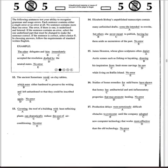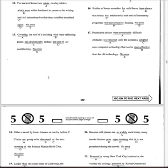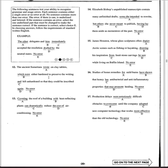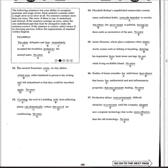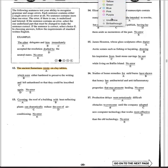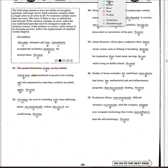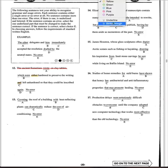These are the questions which can play an important role in making your score up or making your score down. Let's start with number 12: 'The ancient samurai wrote on clay tablets.' We can delete this part out because we do not need it. 'Which were either' — either is an important word because it's a conjunction, so we want to highlight that. Either... or, so the answer is C.